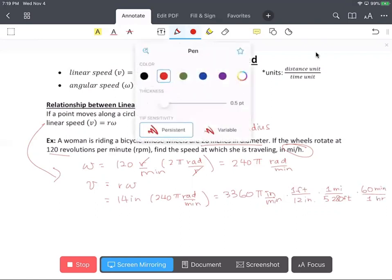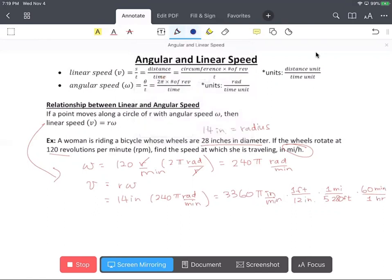If you look at the units, inches cancels, feet cancels, and minutes cancels. We end up with miles per hour. When you multiply this out you get 35 pi over 11 miles per hour, which is about 10 miles per hour.